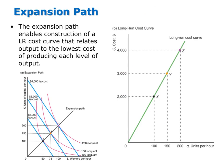Now let me show you how, given an expansion path, we can construct a long-run cost curve. A long-run cost curve shows the relationship between the minimum cost and each level of output. This connection between an expansion path and a long-run cost curve is a lot like a connection we saw in consumer theory.